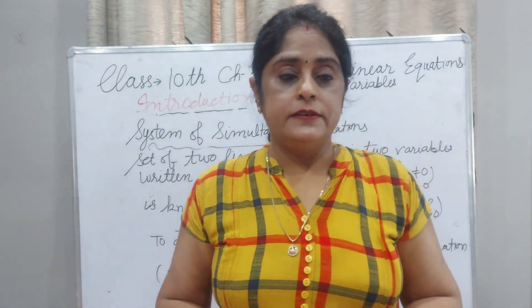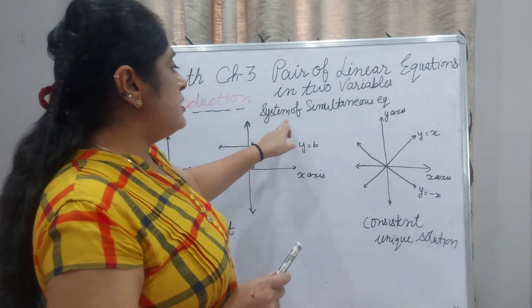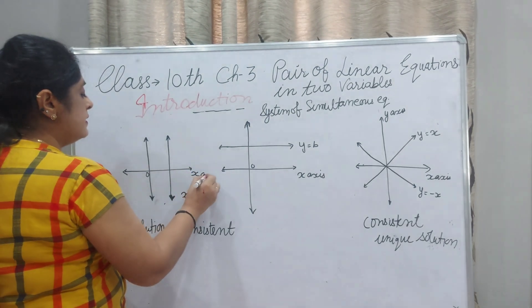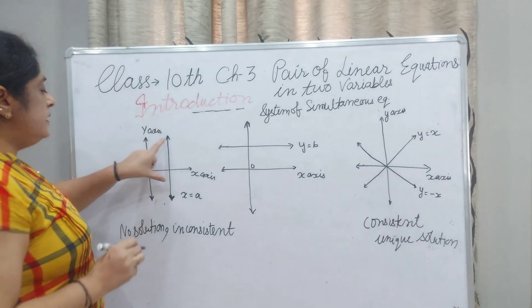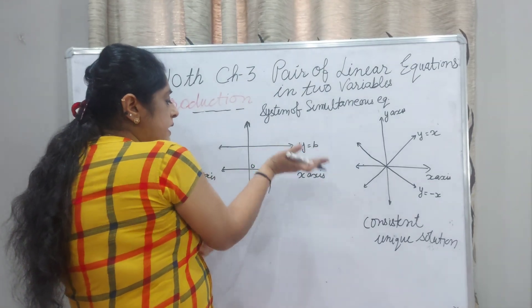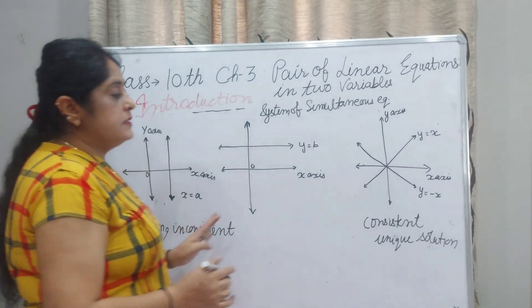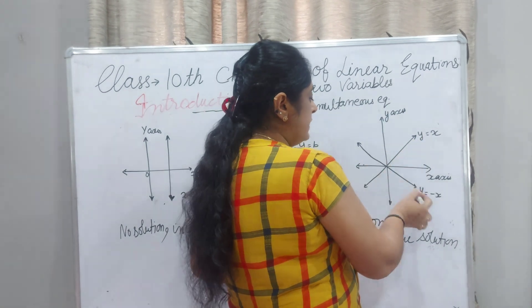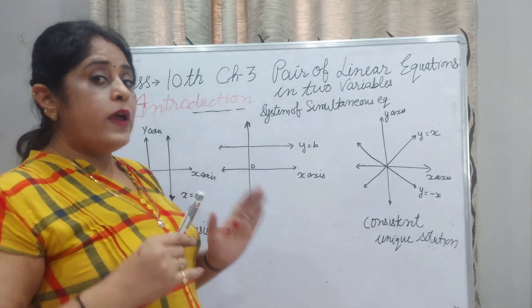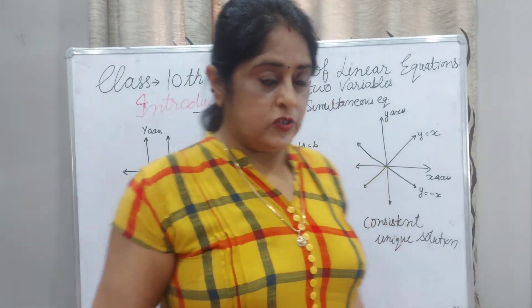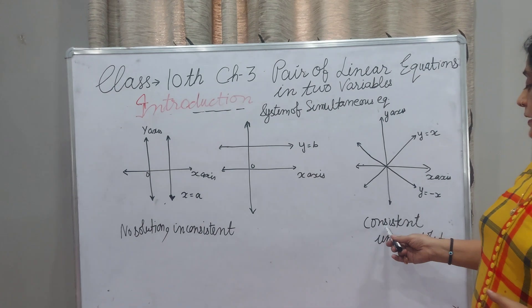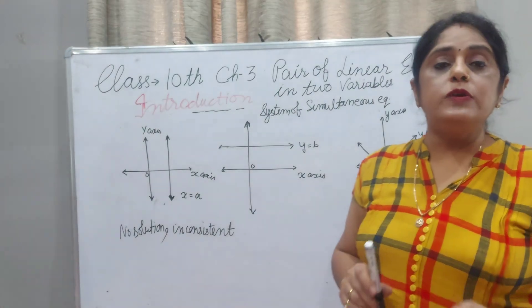Now I am telling you the graphical method. If X = a, this line is parallel to the Y-axis. When Y = b, this line is parallel to the X-axis. Sometimes you get a graph where two lines intersect each other. When lines are parallel to the X-axis or Y-axis, there is no solution and the system is inconsistent. When they intersect at a point, the system is consistent and we get a unique solution.